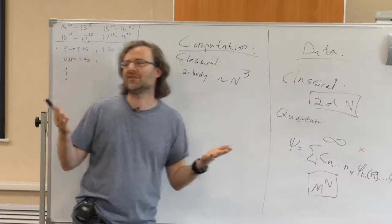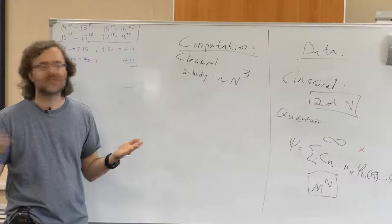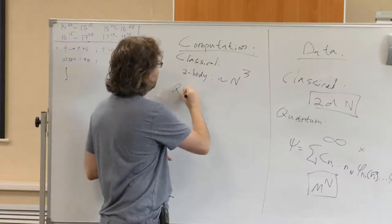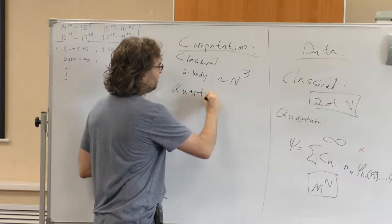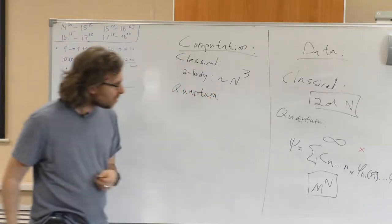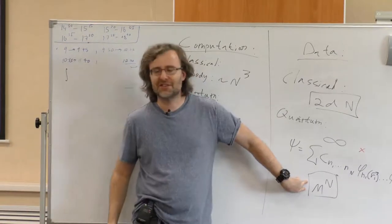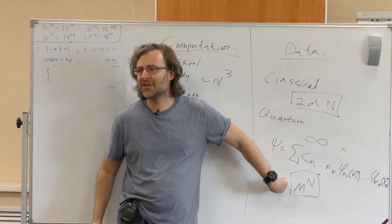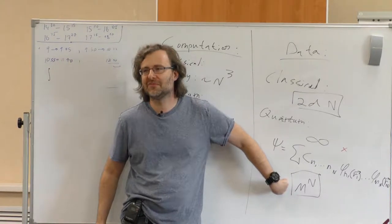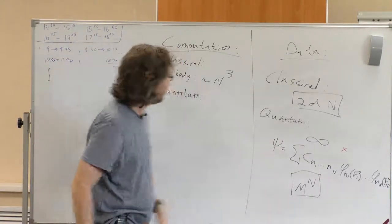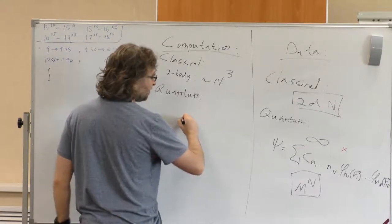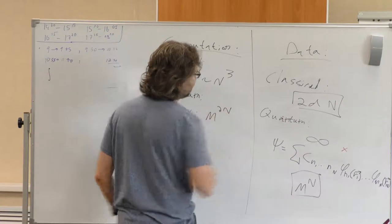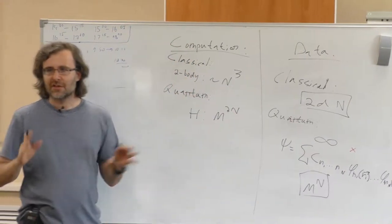The reason we can't do that for quantum systems is that the wave function already requires exponential storage. But if you actually need to write the full Hamiltonian, the Hamiltonian is like the wave function squared — so it's like M to the 2N. At something like 30 spins you run out of memory in the world.